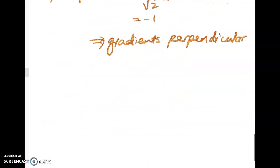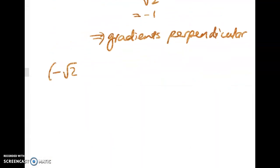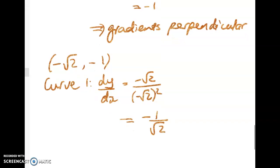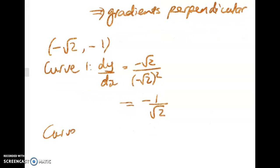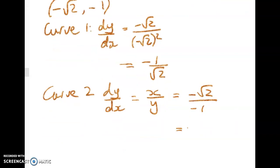So this last point if we sub in negative root 2, negative 1 we get curve 1 dy by dx is equal to negative root 2 over negative root 2 squared which again gives me negative 1 on root 2. And for curve 2, dy by dx is x over y which is negative root 2 over negative 1 which gives me root 2. Negative 1 on root 2 times root 2 is equal to negative 1. So we've got perpendicular gradients again.